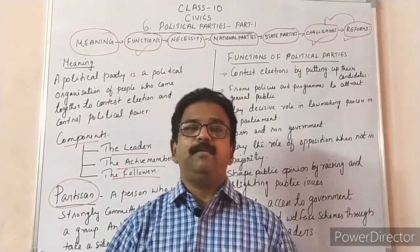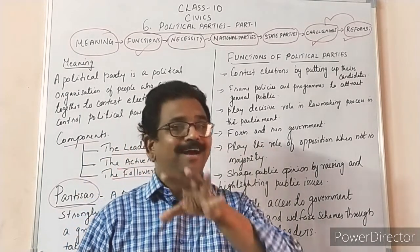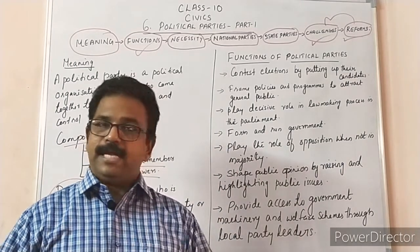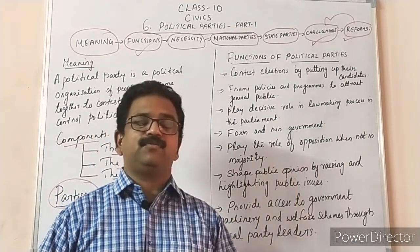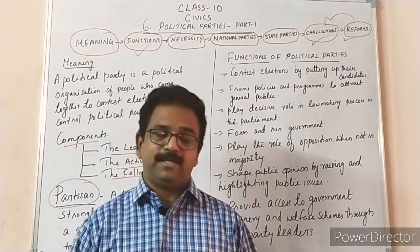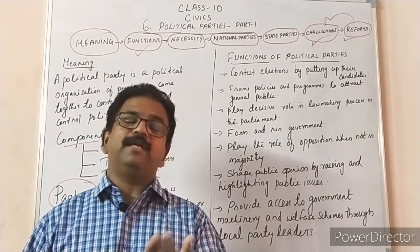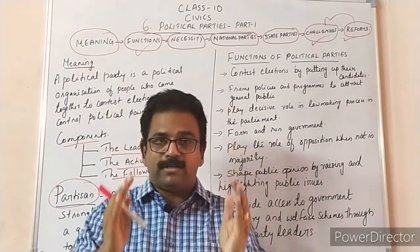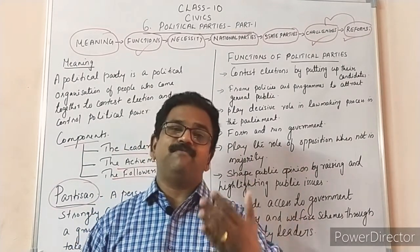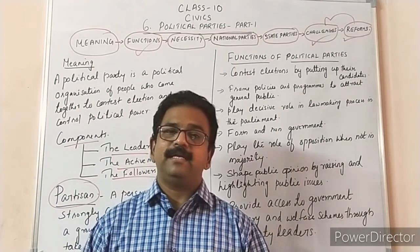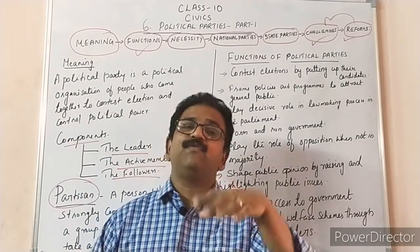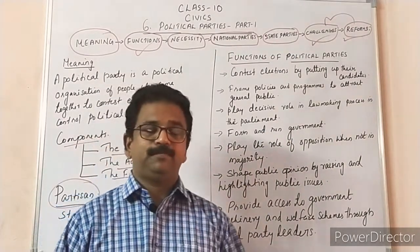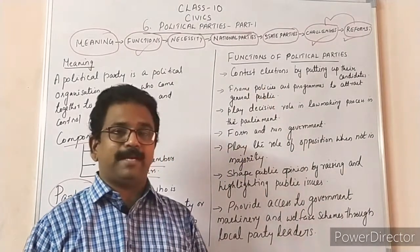What does a political party do? Basically, political parties fill political offices and exercise political power. Parties do so by performing a series of functions. Now we are going to talk about the functions of political parties. This question is very important — it can come for five marks or three marks. There are a total of seven points. My advice is to learn all seven, so that even if you forget one or two, you can still write a complete answer.